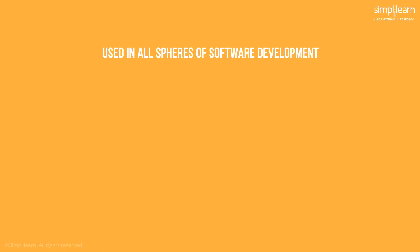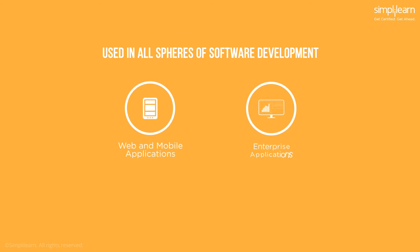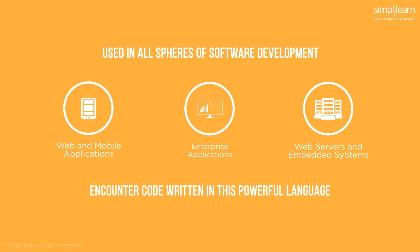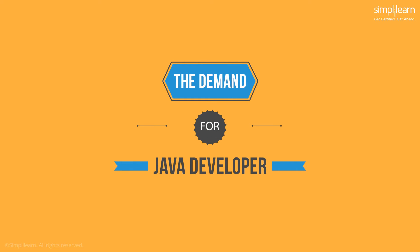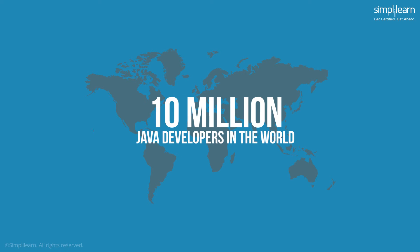Java is used in all spheres of software development — be it web or mobile applications, enterprise applications, web servers, or embedded systems. You'll definitely encounter code written in this powerful language, and to no one's surprise, the demand for Java developers has never been higher. Globally, there are expected to be more than 10 million Java developers in the world.